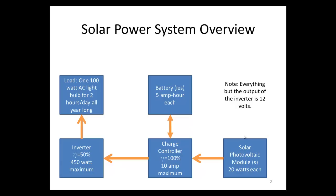We have a couple different things that we need to define here. First, let's start with the load. The load is something like a light bulb or a fridge, or anything that uses electricity — anything you plug in your house. In this case, it's going to be plugged into the solar power system. We're going to be using a 100-watt AC light bulb, and we're going to be using it for two hours a day all year long.